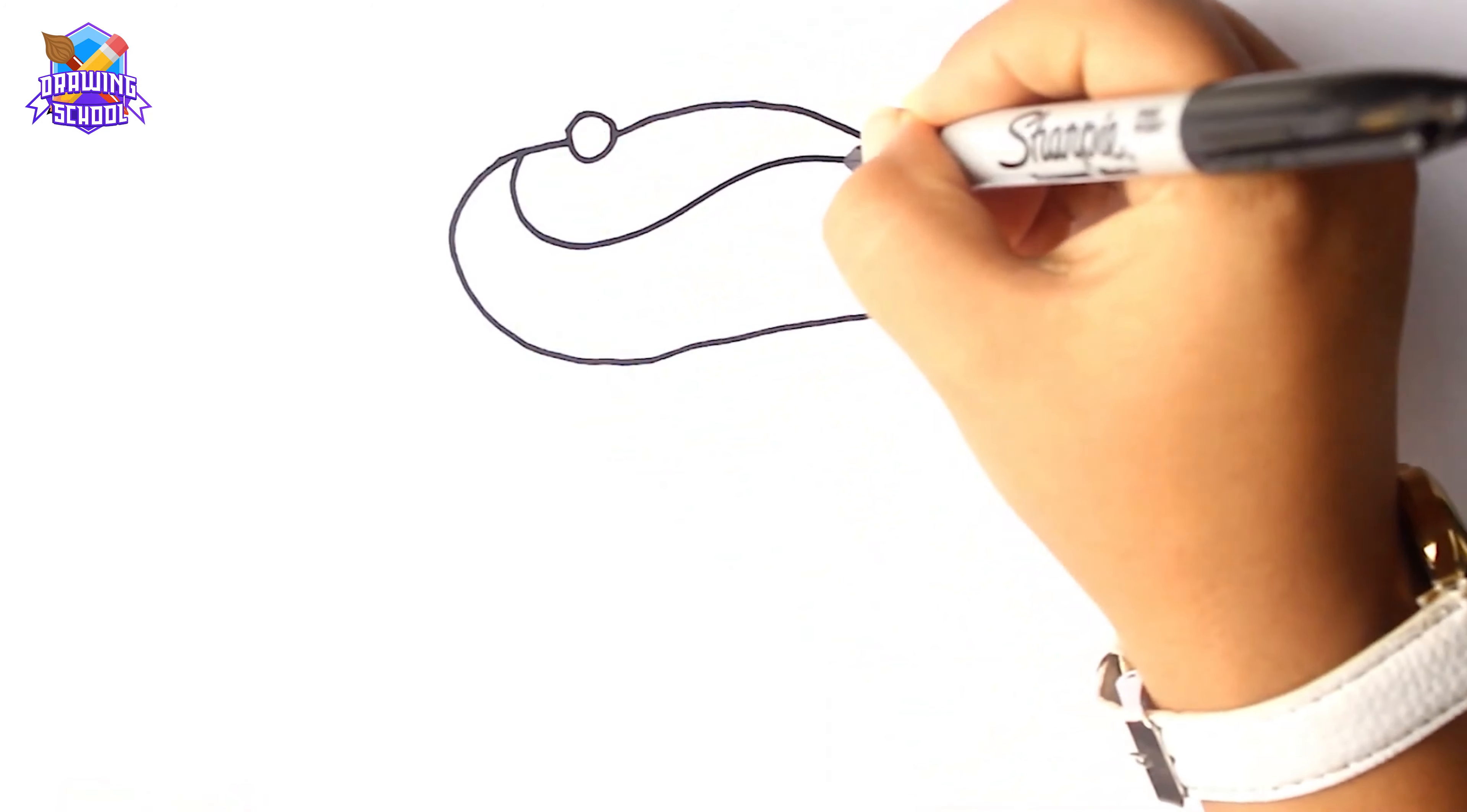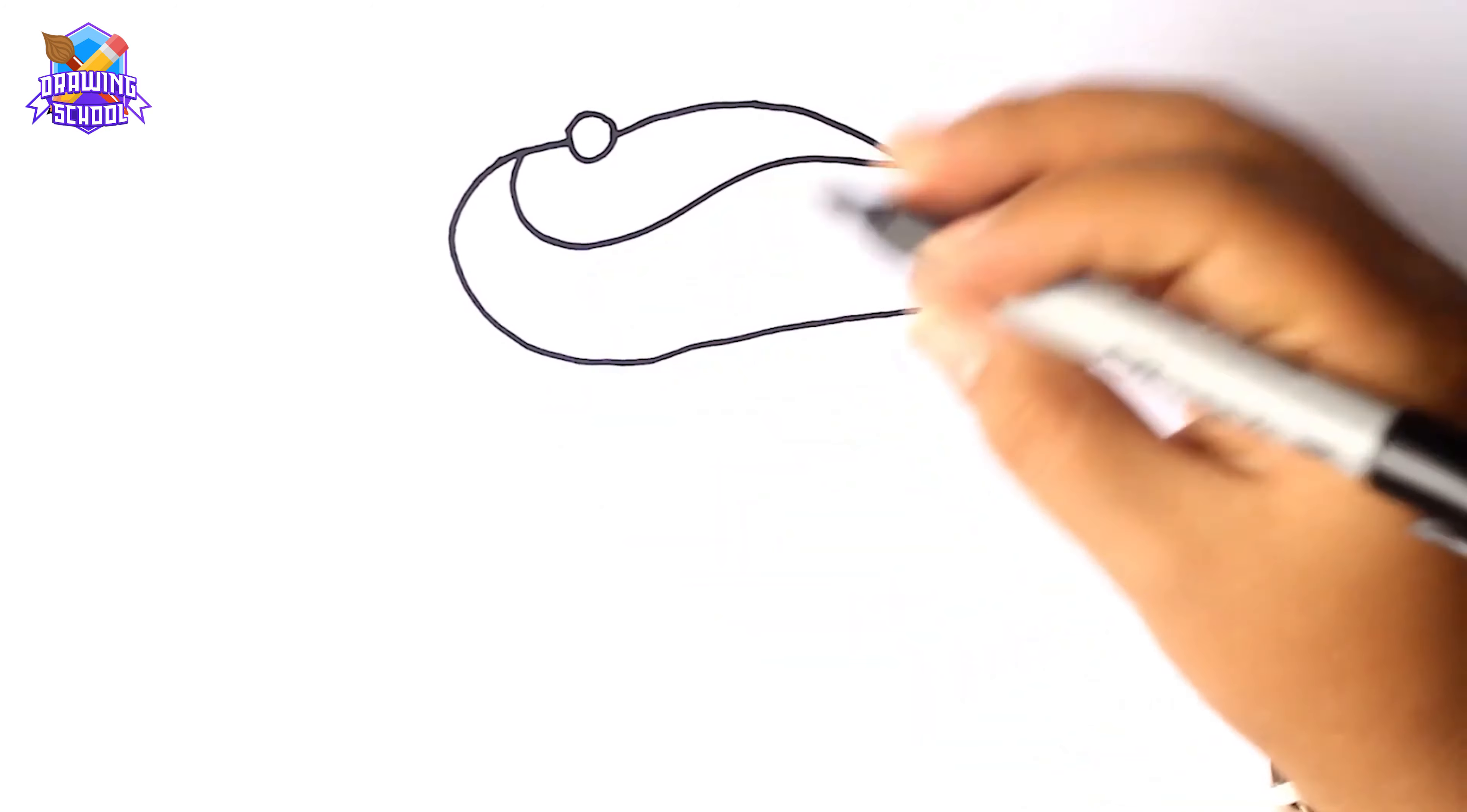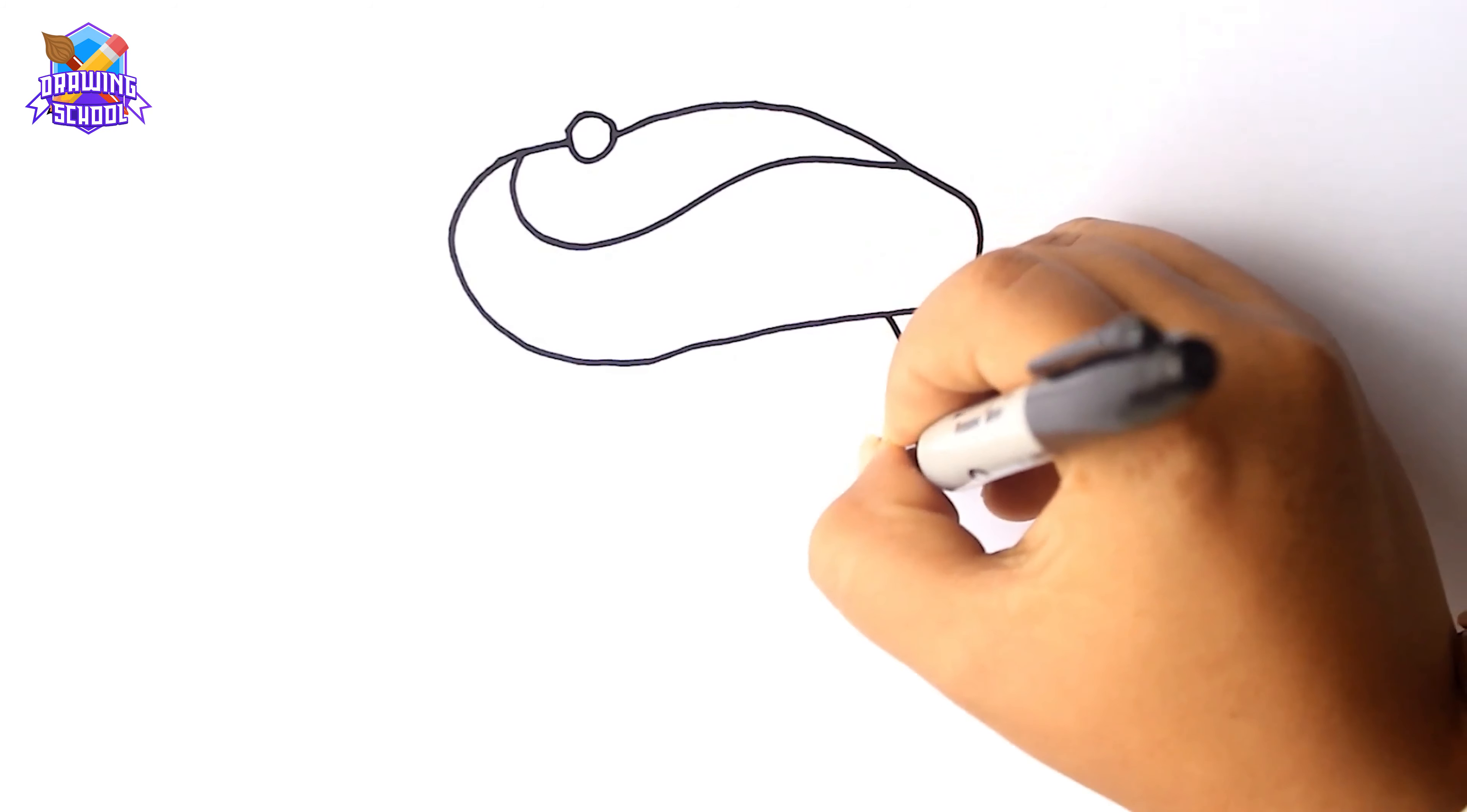I'm starting with a little circle like this and then I'm going to pull a line all around it, drawing a kind of oval. And now we're going to draw the rest of the structure.